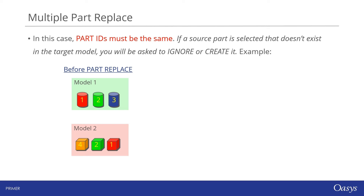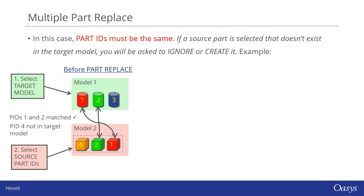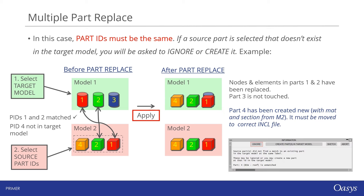Let's look at the special case where a selected source part ID doesn't match any part in the target model. After selecting the target model and source parts — including, say, part four which doesn't exist in the target — Primer will offer a panel asking what to do with that unmatched part. We can either ignore it, in which case Primer won't create a new part in the target model, or we can choose to create the part in the target model, as shown in the modified model on the right.